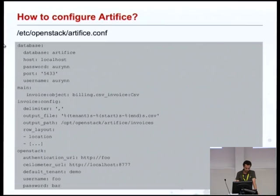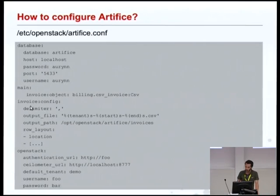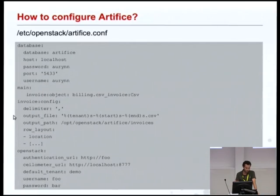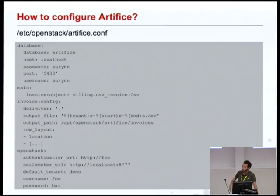The first section is where you define the database used by Artifice. The second section is where you define the plugin that you will use for your invoice. And then you have the specific configuration for that plugin — in this case, the output file, the output path, and the row layout. In this case, I'm using the CSV plugin.